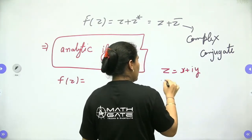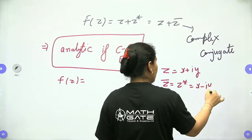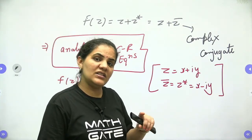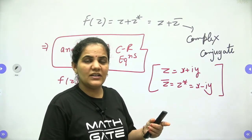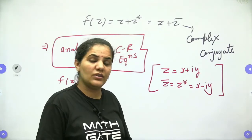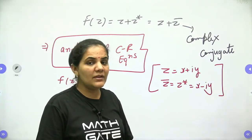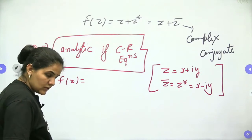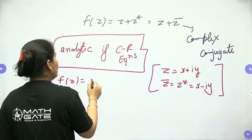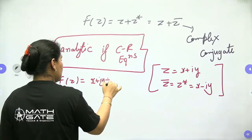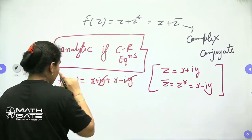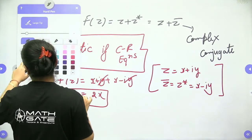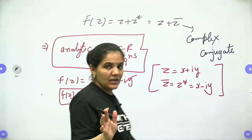So f(z) equals (x + iy) + (x minus iy). The imaginary parts cancel out, giving f(z) equals 2x. Since f(z) equals 2x, there is no imaginary part.